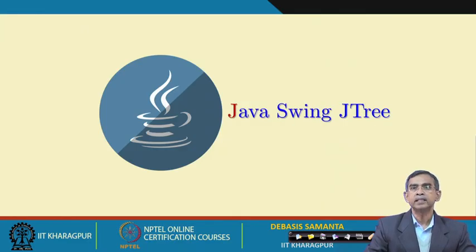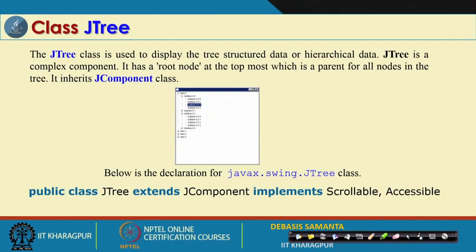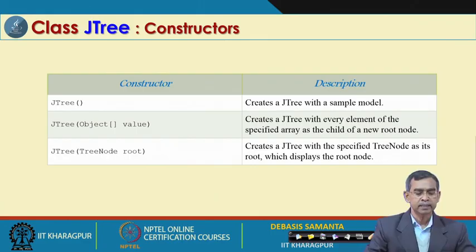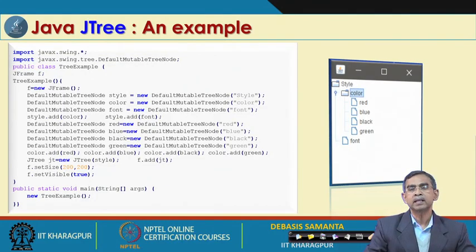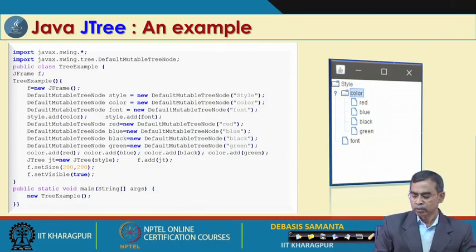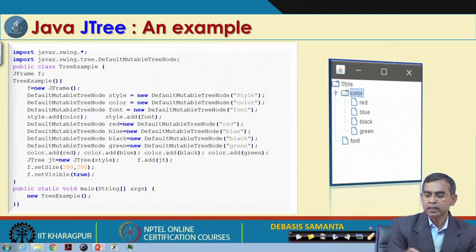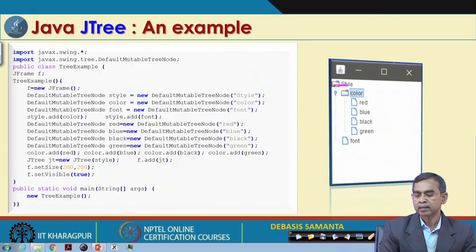JTree is a very interesting Swing component. We are also familiar with it — whenever we browse a directory, it shows what subdirectories exist under a directory and what files are under those subdirectories. The entire tree can be maintained using a component class from which information can be obtained from the drive. It has 3 constructors. In the example, there is a root with 2 nodes, and under those nodes there are sub-nodes.